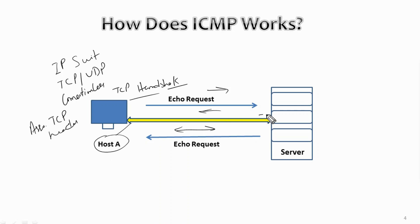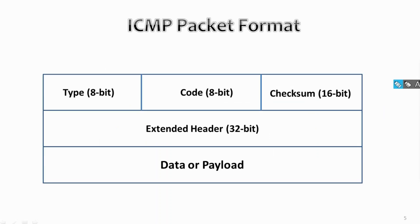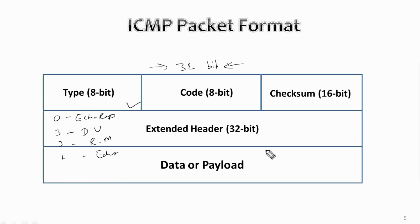Now let's look into the ICMP packet format. The first 32 bits contain three major fields: type, code, and checksum. The type field is the initial 8 bits and provides a brief description of the message so the receiving network knows what kind of message it is receiving and how to respond. Common message types include: type 0 (echo reply), type 3 (destination unreachable), type 5 (redirect message), type 8 (echo request), type 11 (time exceeded), and type 12 (parameter problem).